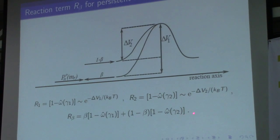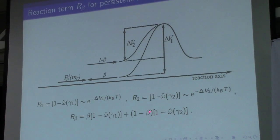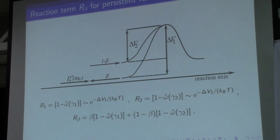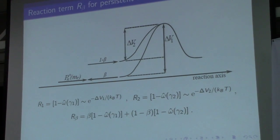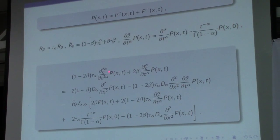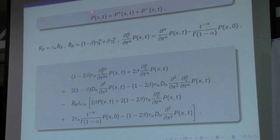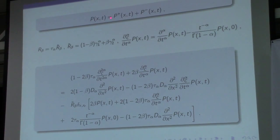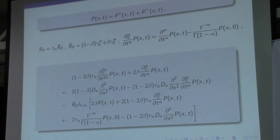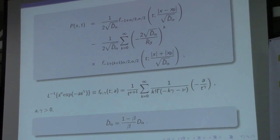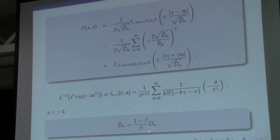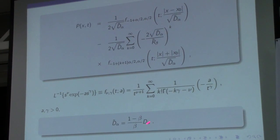After rather long calculations, we get the equation for the probability describing the motion of particle A. This is a long and rather complicated equation. The solution is as follows, where we introduce new sub-diffusion parameters which depend on the parameter beta.